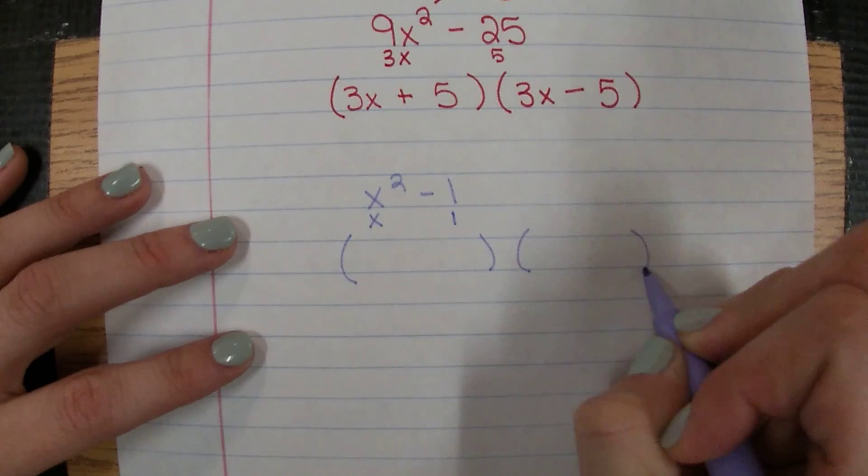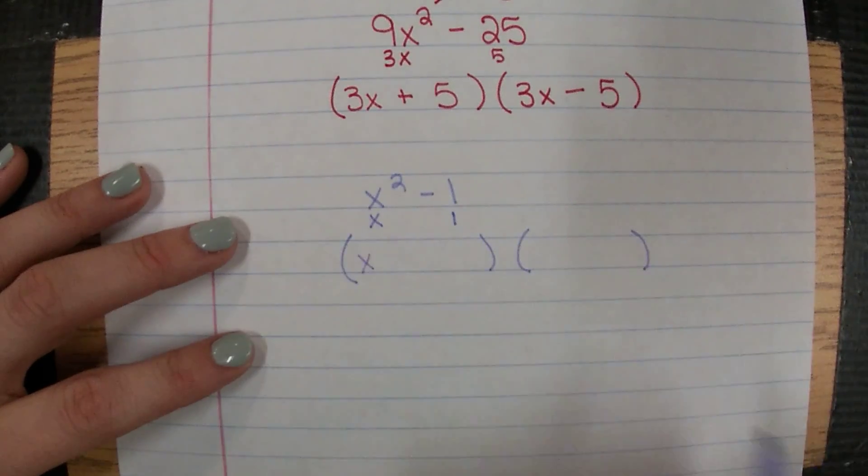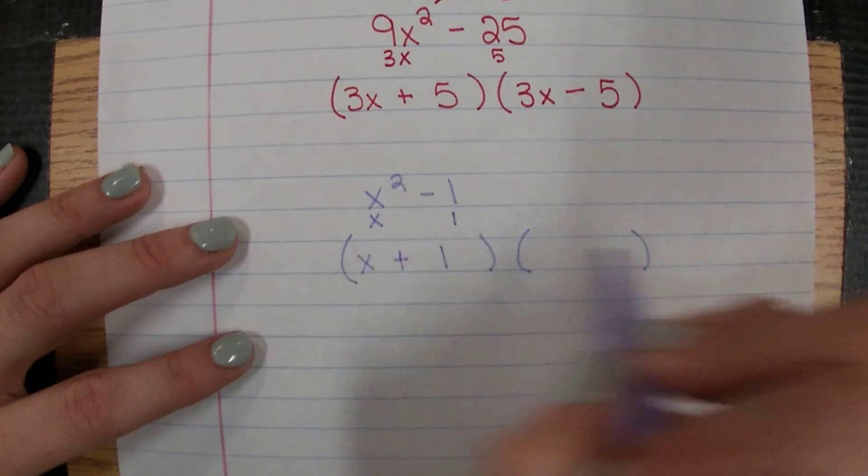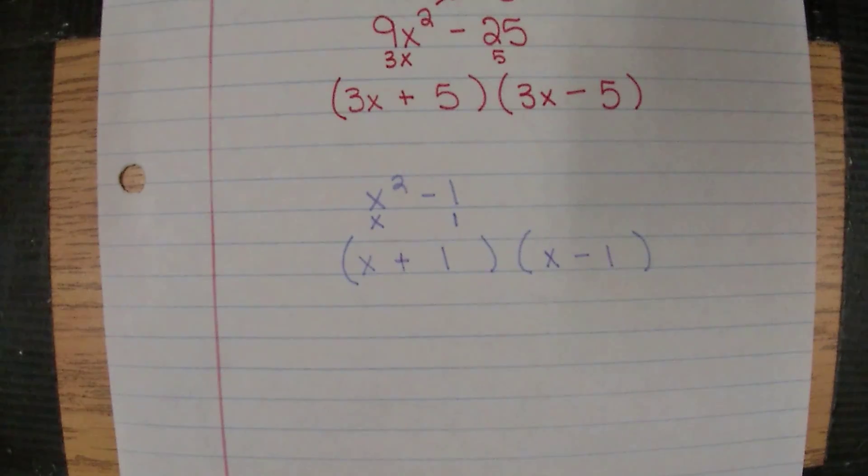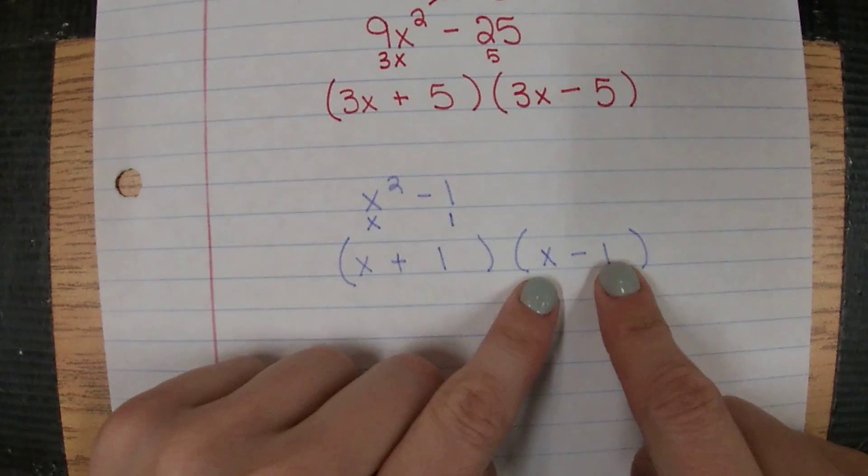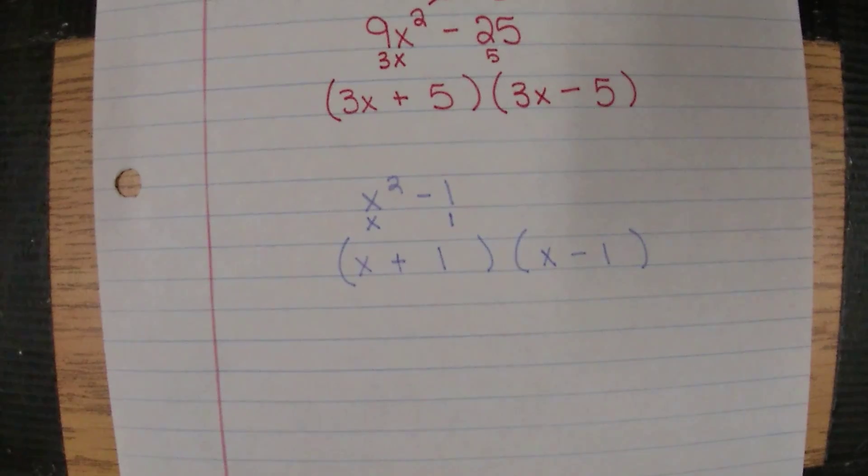We can go into two binomials. We have one that's going to be an x plus 1 and one that's going to be an x minus 1. I'm just keeping these orders the same and giving one addition and one subtraction.